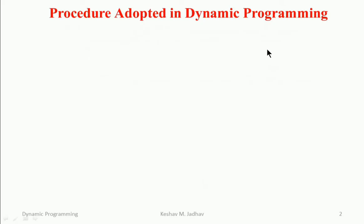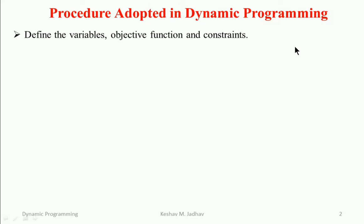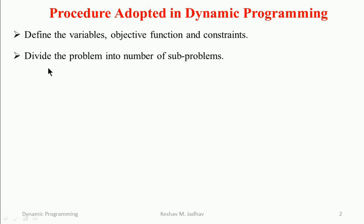First we will see the general procedure adopted in dynamic programming technique to solve a multi-stage optimization problem. First, define variables, objective function, and constraints. Then divide the problem into a number of sub-problems. In dynamic programming, a large problem can be solved by dividing it into a number of subproblems or stages.